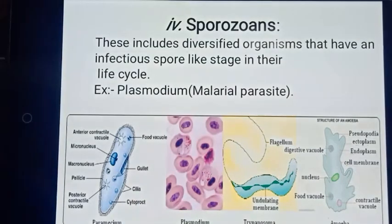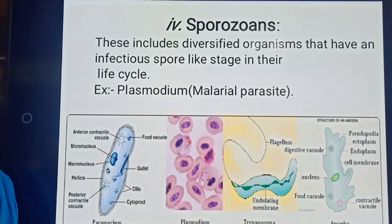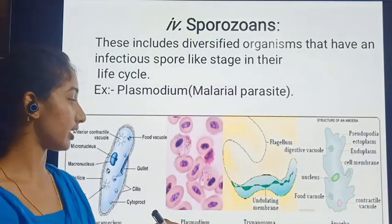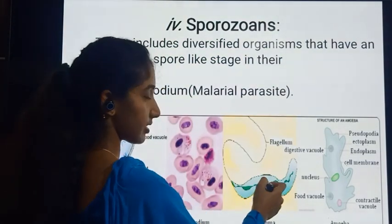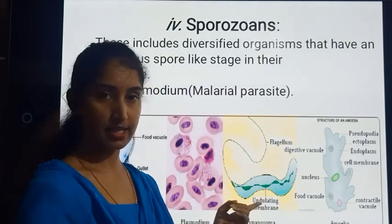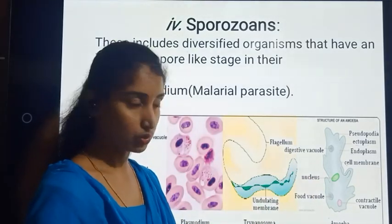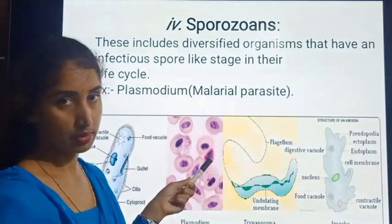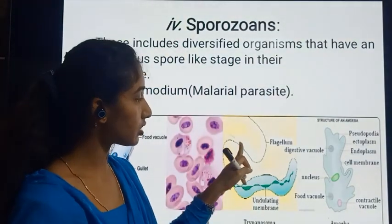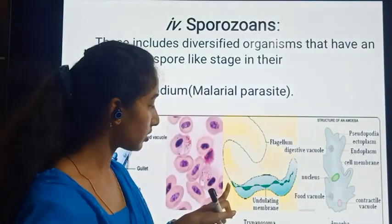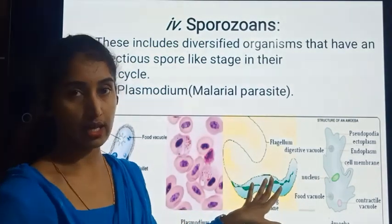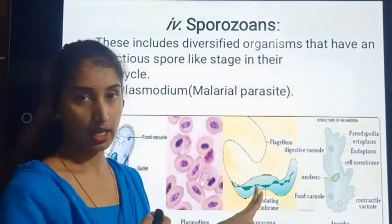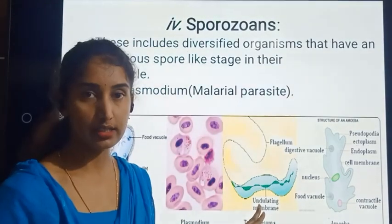Paramecium also has a food vacuole, gullet, and cytoproct. This is the structure of Paramecium, taken as the example for ciliated protozoa. Next comes Trypanosoma as an example for flagellated protozoa. It is also a single-celled organism with an undulating membrane. From one of the posterior tips, there is a small elongated tubular whip-like structure — the flagellum — which is the locomotory structure.